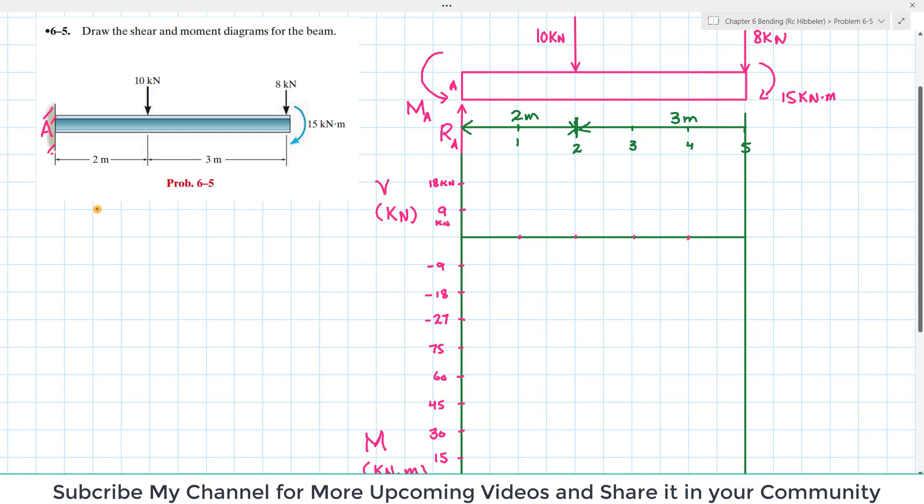By using the equilibrium condition, sum of all forces along y direction equals zero, taking upward forces as positive. RA minus 10 kN minus 8 equals zero. From here RA equals 18 kN.